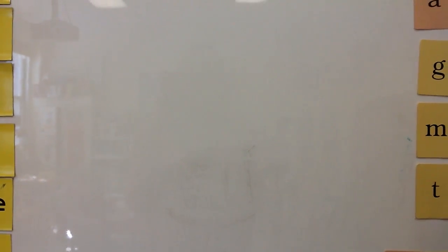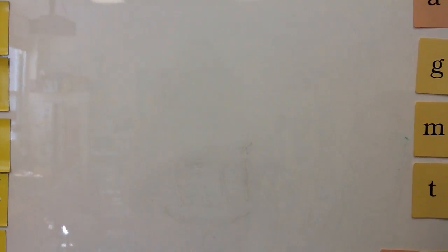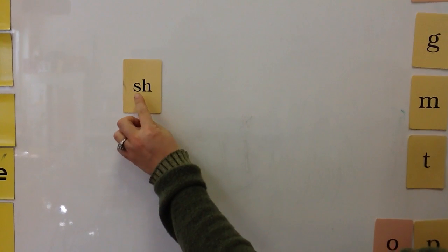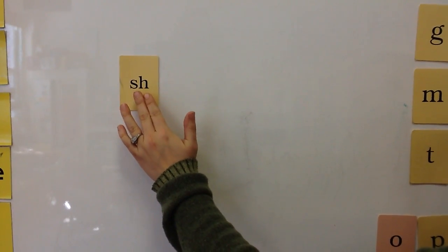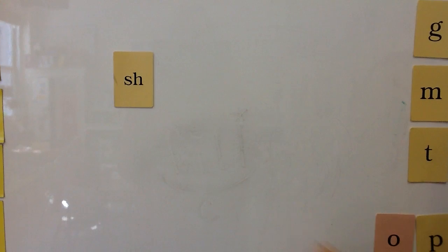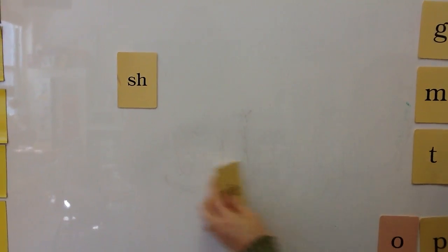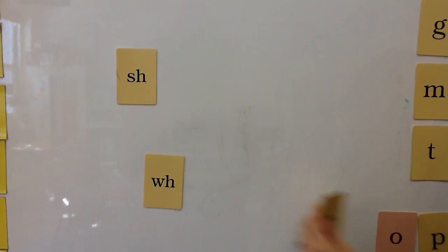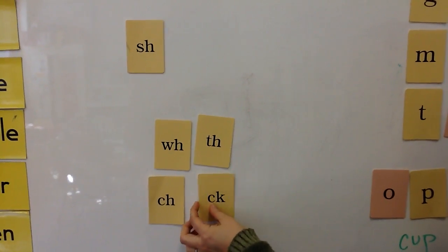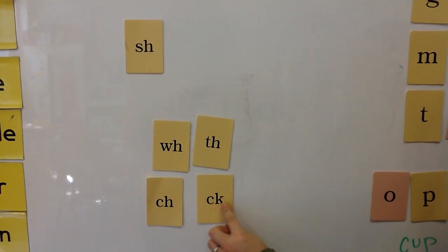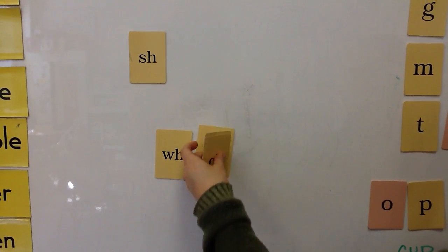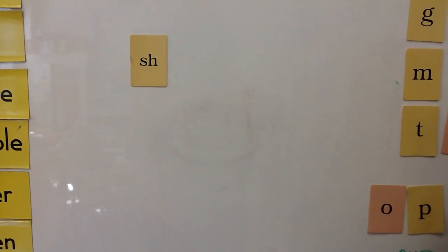Another closed syllable that you may run into has a digraph in it. A digraph is any two letters that make one sound. So: SH, WH, TH, CH, and CK. CK only comes at the end of words and would be marked as a digraph.